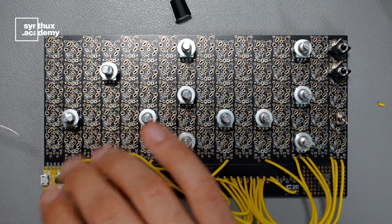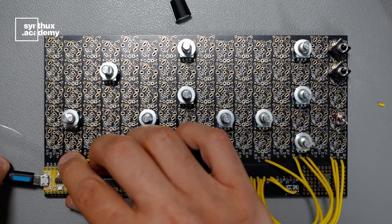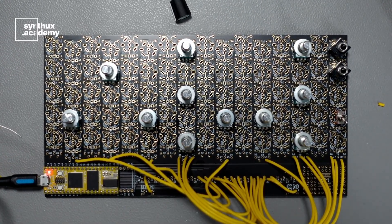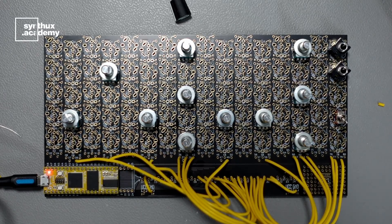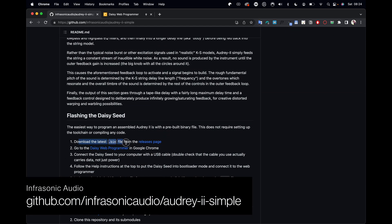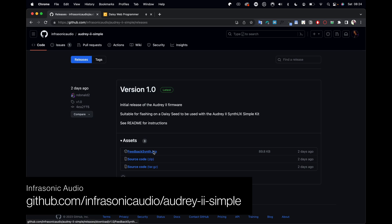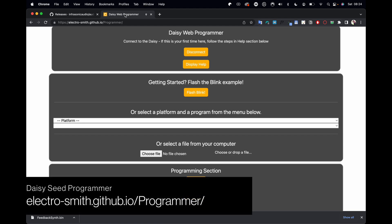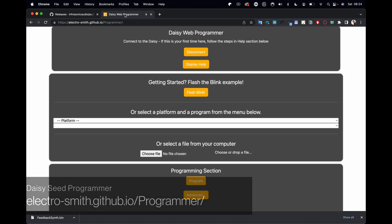Last thing we need to do before we can actually close the front panel and start to play the instrument is to install the program on the microcontroller. The way we do this is in two steps. First of all, we go to GitHub and we download the bin file. And then the second step is to go to electrosmith.github.io/programmer. This is the daisy programmer and flash the code from there.